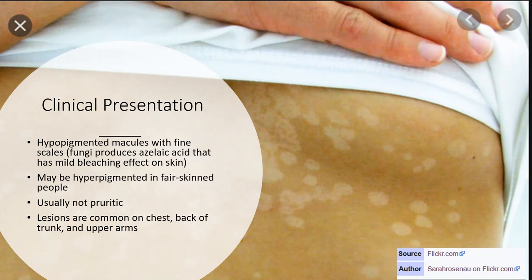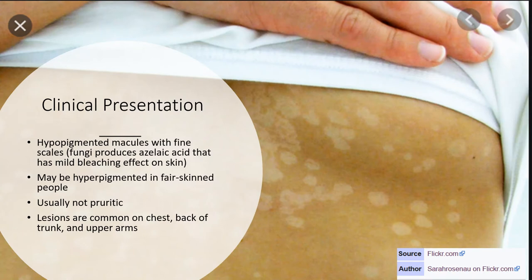At the same time, some people — especially those with very fair skin — can have hyperpigmented macules, though hypopigmented macules are what you most commonly see, as shown in this picture. These lesions are very common on the chest, back of the trunk, upper arms, and around the face. Usually the lesions are not pruritic — there is no itching. So it is essentially a cosmetic problem, with hypopigmented macules being the major complaint.